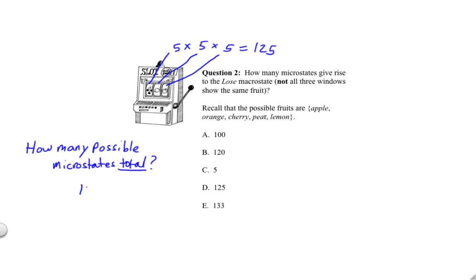Okay, so the answer to this one is 125, but we're not done yet. That was the total number of microstates. The number of lose microstates is the total number minus the number of win microstates. So, if you remember that the win microstates, there were five of them, the total number of lose microstates is 120. That is 125 minus five.